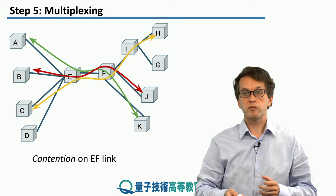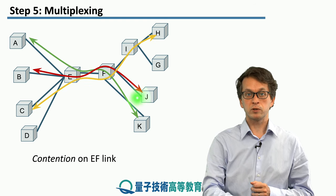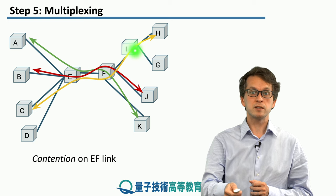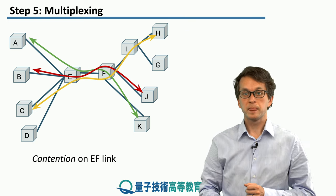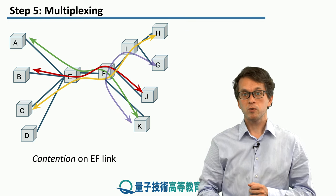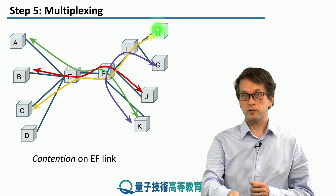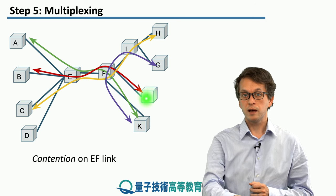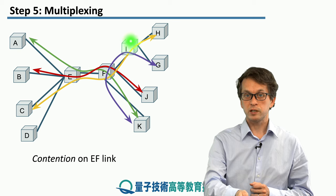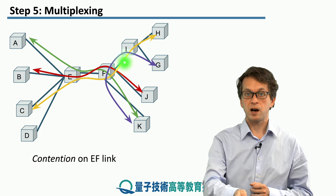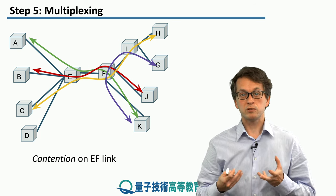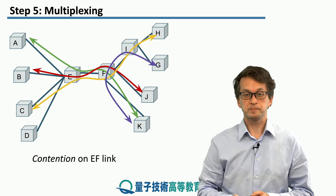Furthermore, we can have more nodes trying to establish end-to-end entanglement simultaneously — for example, C and H, or node G trying to communicate with node K — which creates contention on the F-I link. The network needs to know how to handle all such resource contention requests.